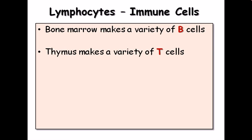Antigens are harmful materials secreted by organisms that infect us. Antibodies are beneficial proteins produced by our body's own cells — specifically the B cells. Mature B cells produce antibodies, which fight against antigens, capture them, and inactivate them.